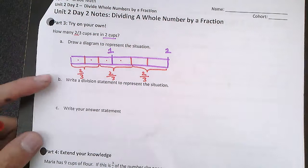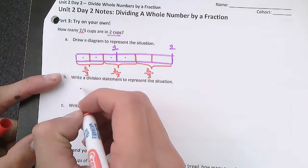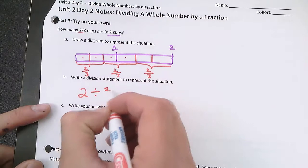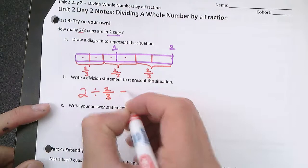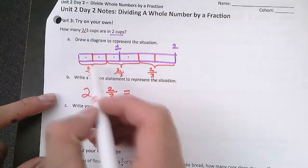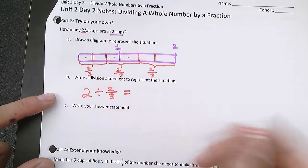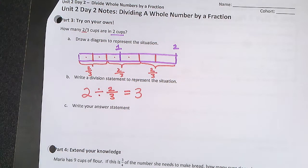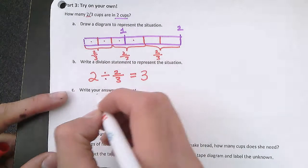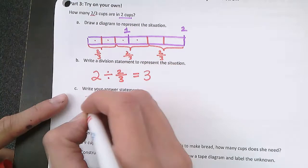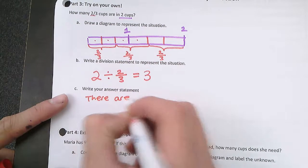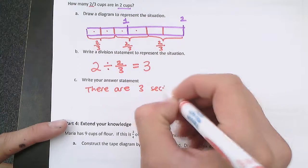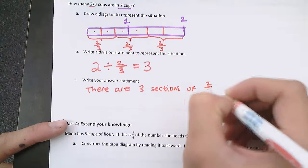When I write my division statement: how much am I starting with? Two wholes. We are splitting those two wholes into sections that are two-thirds. So two divided by two-thirds. I check how many sections of two-thirds are in two wholes: one, two, and three. So there are three sections of two-thirds. There are three two-thirds cups in two cups.